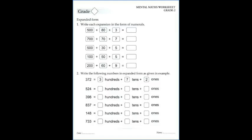All of you look at this worksheet children. The first question is: write each expansion in the form of numbers. First we have 500 plus 80 plus 3 — what number do we get? It is 583. Now the second question: 700 plus 70 plus 7 — what number do we get? It is 777.